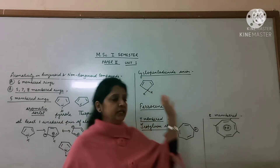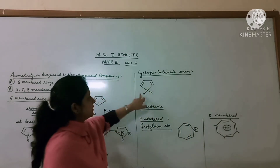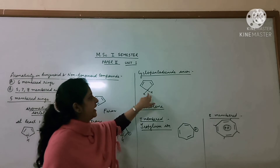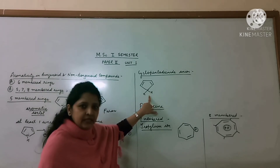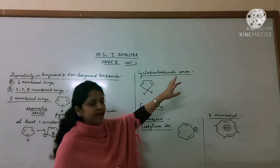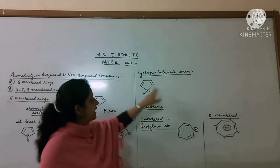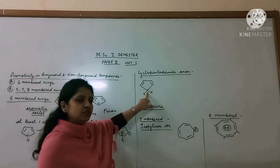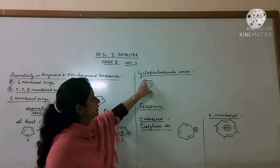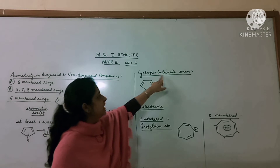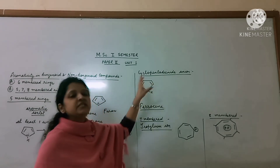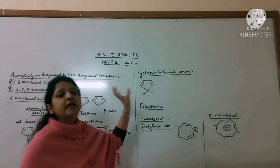The five-membered ring third compound is cyclopentadiene. Cyclo means cyclic structure, penta means 5 carbons, di means 2, and ene means double bonds — so there are 2 double bonds. This is cyclopentadiene.